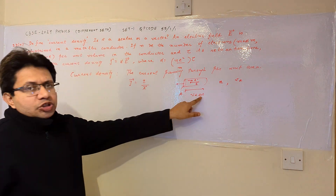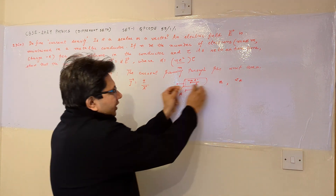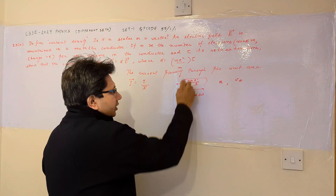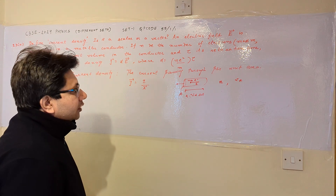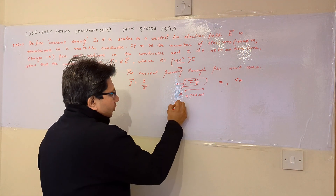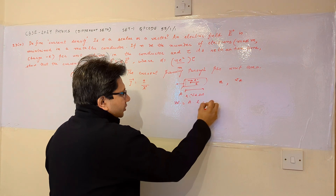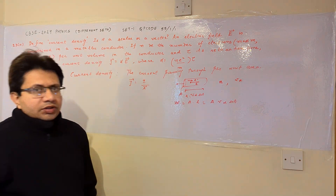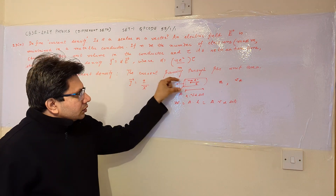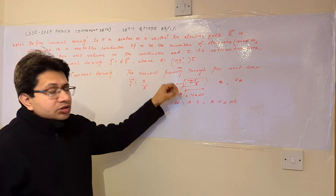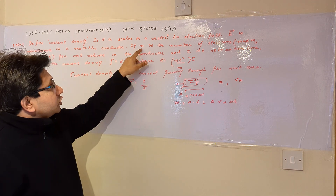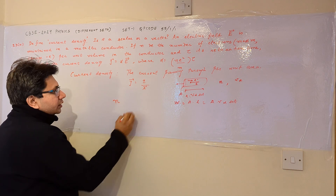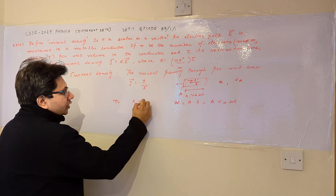The electron covers a distance vd·Δt in time Δt. This is the length, and multiplied by the cross-sectional area A gives the volume: A·vd·Δt. This is the volume covered by the group of electrons. Since n is the number of electrons per unit volume, the total number of charge carriers is n·A·vd·Δt.